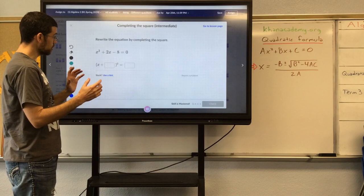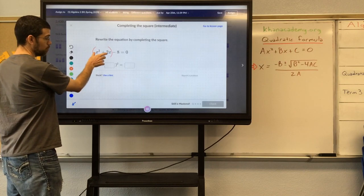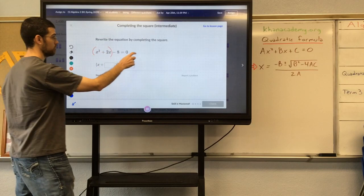First thing we want to do is group just the terms with x in them, like this. We can do that because addition is associative. And then we want to complete the square on this. We want a perfect square trinomial.